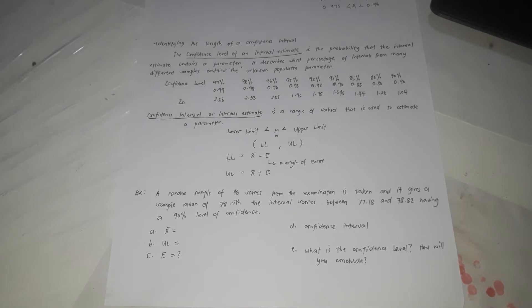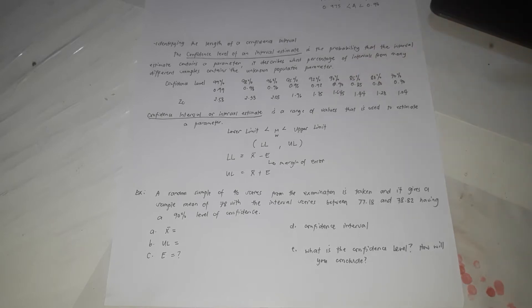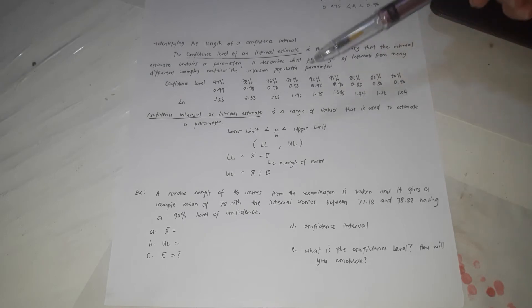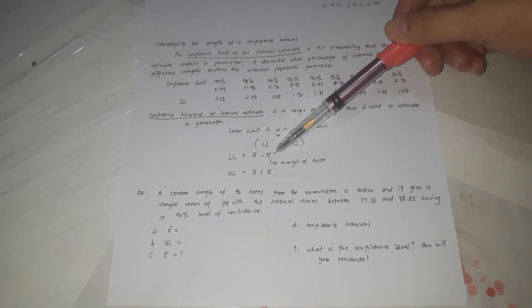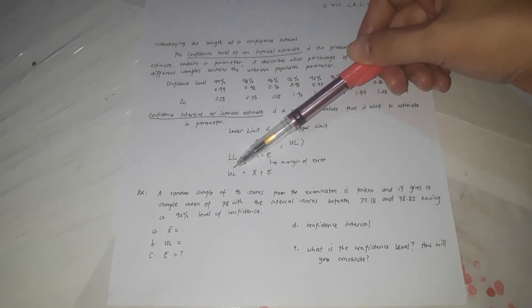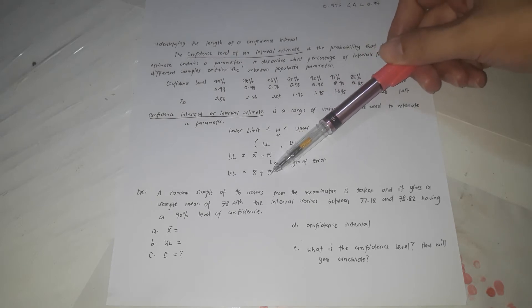The confidence interval, or interval estimate, is a range of values used to estimate a parameter. This interval contains the parameter, but since the parameter is unknown, we are just estimating the interval where the parameter lies. For the mean, it is between the lower limit and the upper limit. The lower limit equals the sample mean minus the margin of error, and the upper limit equals the sample mean plus the margin of error.